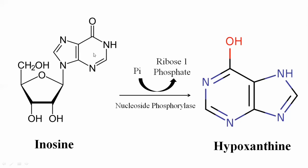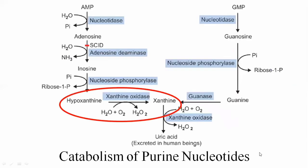Nucleoside phosphorylase, with the help of phosphate, removes the ribose sugar from the nucleotide base. The ribose sugar is cleaved by the phosphate group in the presence of nucleoside phosphorylase. The phosphate attaches to the first carbon of the ribose sugar, forming ribose-1-phosphate, and hypoxanthine is released as the free nucleotide base.